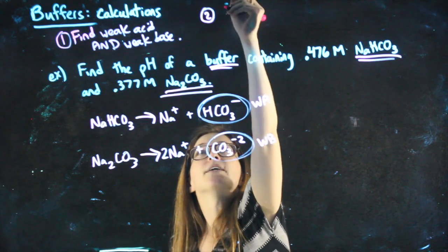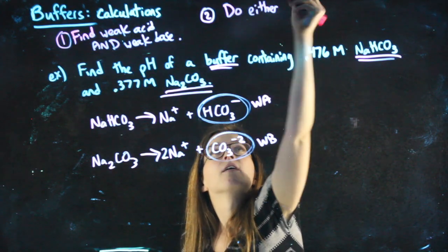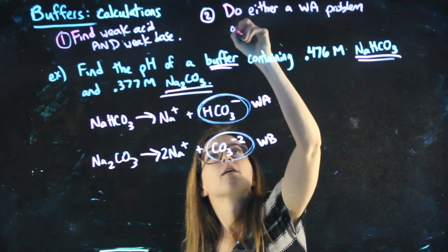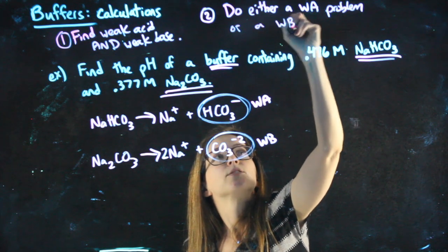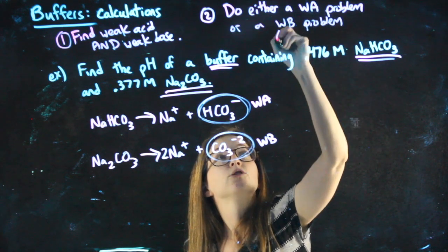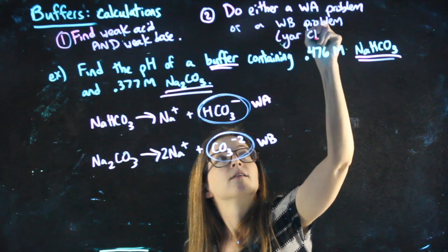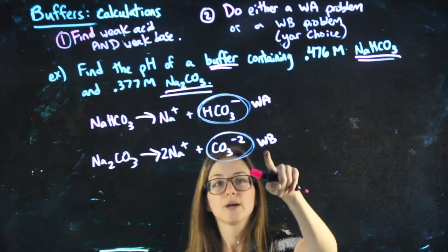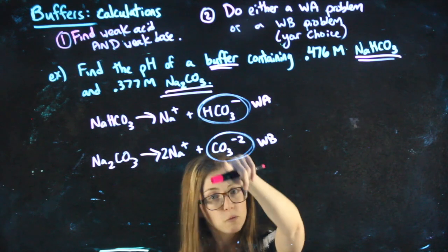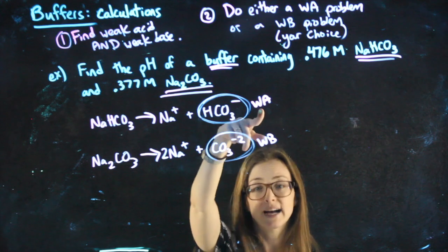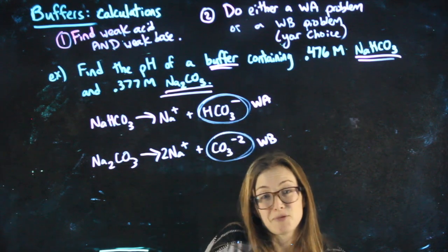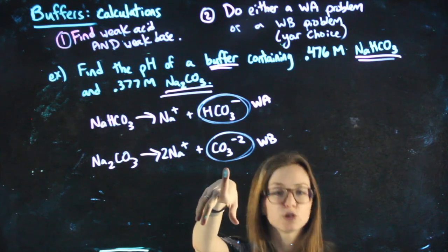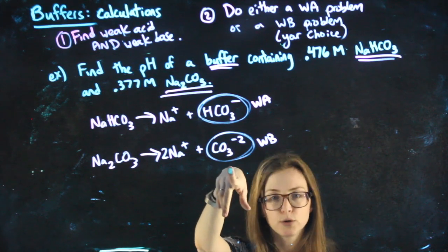My second step is to do either a weak acid problem or a weak base problem. And I really do mean or, it is your choice. We have a weak acid, I could do a weak acid with this. We have a weak base, I could do a weak base with this. It's totally your choice. I always do the weak acid problem because weak acid calculations are easier. There are fewer steps. But you will get the exact same answer, assuming you do it correctly, if you use the weak base.